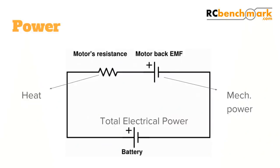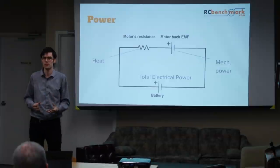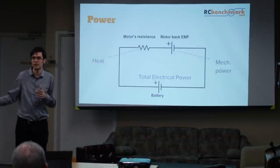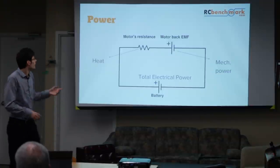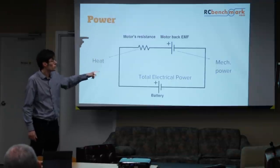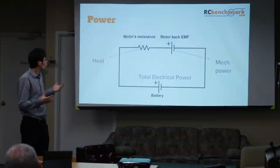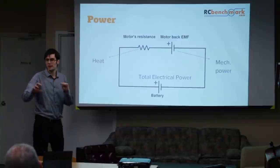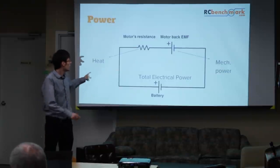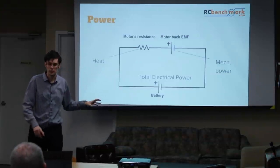So we have motor resistance — just the wire — which produces only heat. That's the inefficiency; it's why your motor heats up like a heater. Then we have the mechanical power, which comes from the back EMF voltage drop. Our goal is to play with those ratios: maximize mechanical power and minimize heat. The sum of both is your total electrical power.